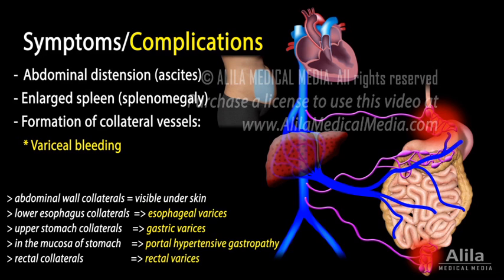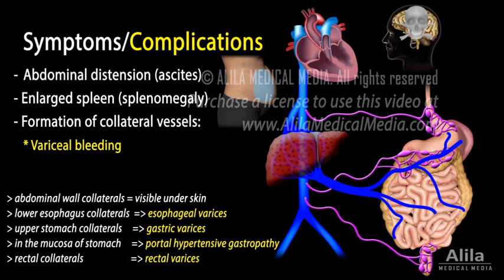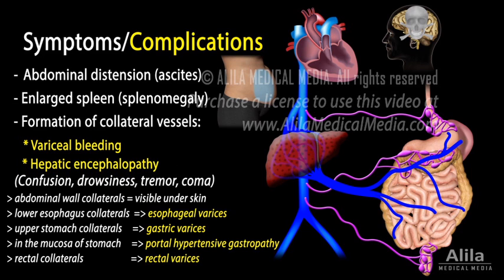Varices may rupture and bleed, and variceal bleeding can be massive and life-threatening. Because collateral vessels direct blood away from the liver, toxins that are normally removed by the liver can now reach the general circulation and pass into the brain, causing symptoms such as confusion, drowsiness, tremor, or even coma, in a condition known as hepatic encephalopathy.